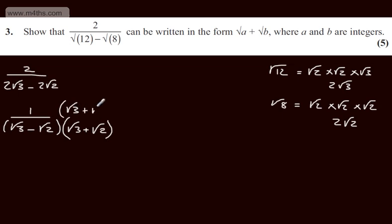So I'll have root 3 plus root 2. If I just rewrite the numerator, we're going to have root 3 plus root 2. Then in the denominator, showing our workings, we're going to have root 3 times by root 3, which is going to give me 3. We will have now plus root 3 times by root 2, which is going to give me plus root 6.